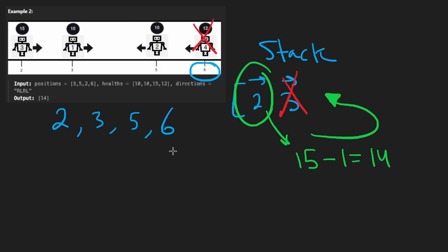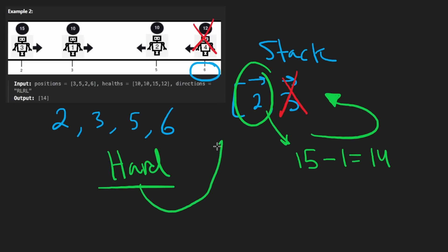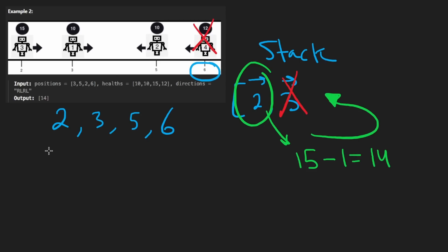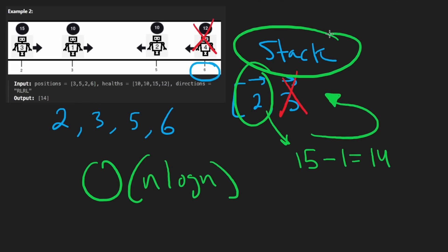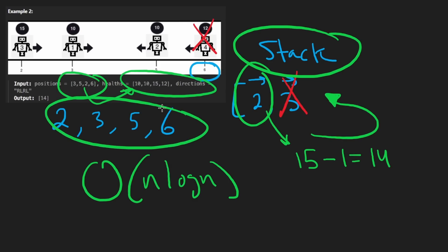I think we're pretty much ready to code up the solution. For complexity analysis: we go through the inputs so it's at least O(N), but we did sorting beforehand so it's O(N log N). The two data structures I'm going to use are a stack, and a mapping from positions to original indexes so we can get the direction and health of each robot.